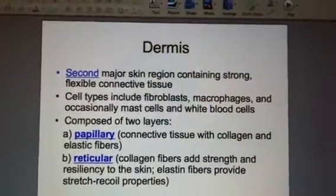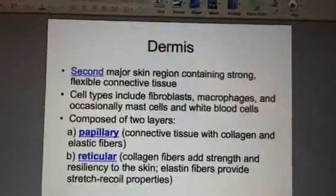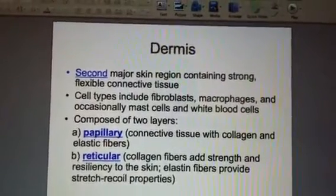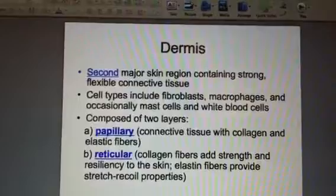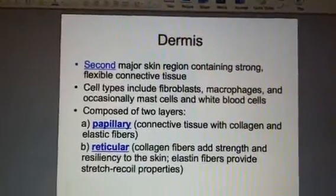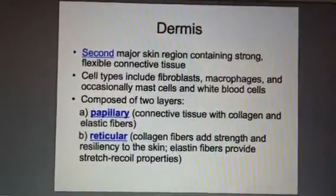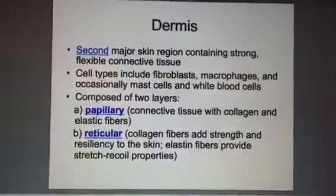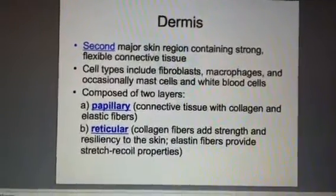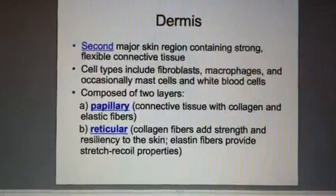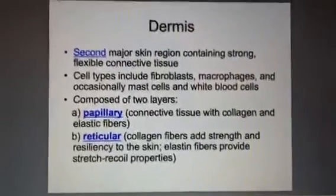Chapter 5, slide 16. We're picking up with the second region of the skin. Remember, the top region is the epidermis. The second and the largest region is the dermis, and this has many different cell types in it: fibroblasts, all types of white blood cells, and other types of cells like macrophages that fight infection.